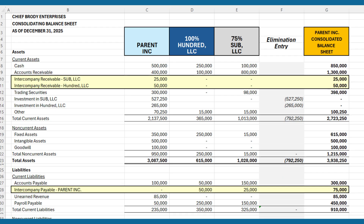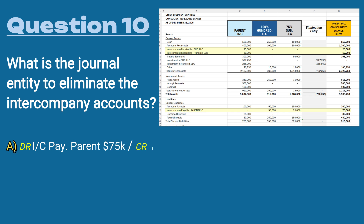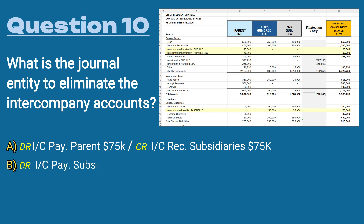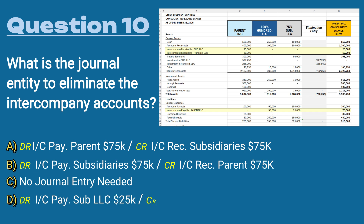Question number ten, our last question — a hypothetical scenario. What is the journal entry to eliminate the intercompany accounts between Parent Incorporated, 100 LLC, and Sub LLC when consolidating the financial statements? A) debit intercompany payable parent $75,000, credit intercompany receivable subsidiaries $75,000. B) debit intercompany subsidiaries $75,000, credit intercompany receivable parent $75,000. C) you don't need a journal entry at all. D) debit intercompany Sub LLC $25,000, credit intercompany receivable parent $25,000.